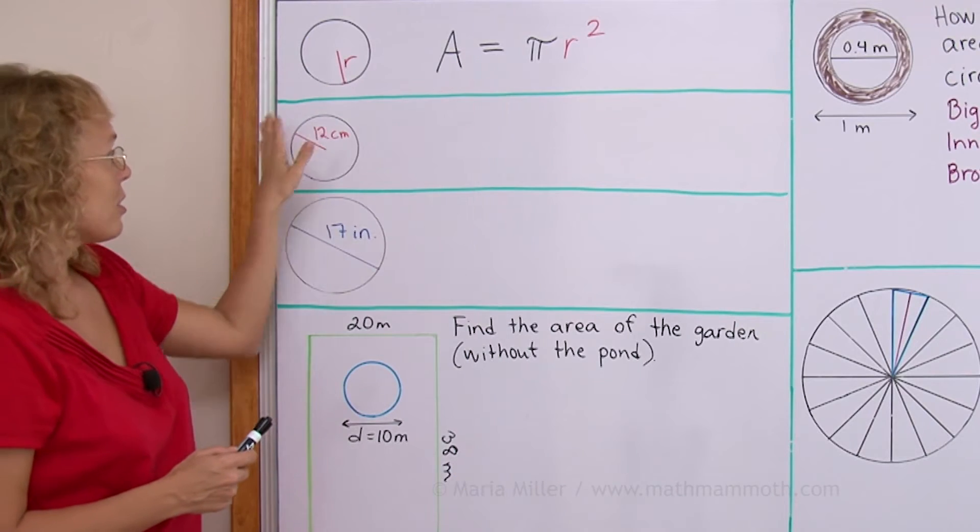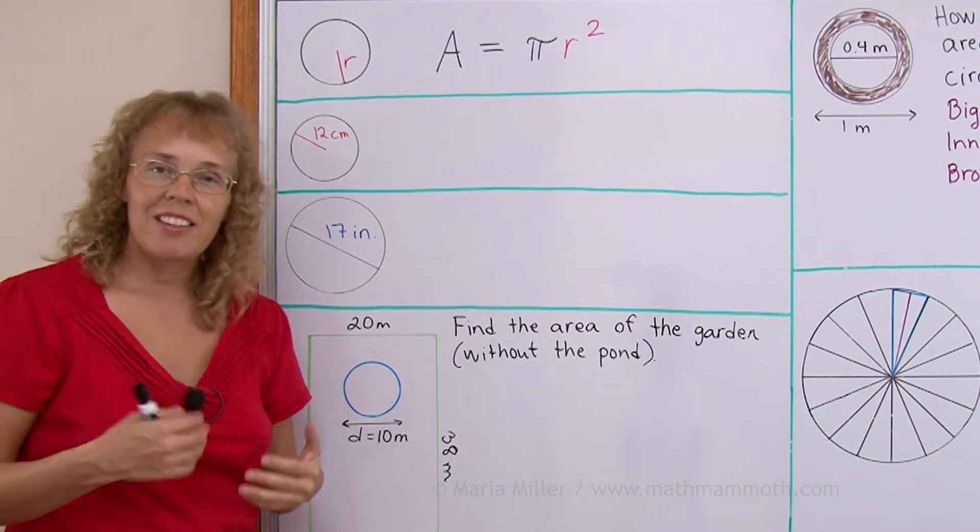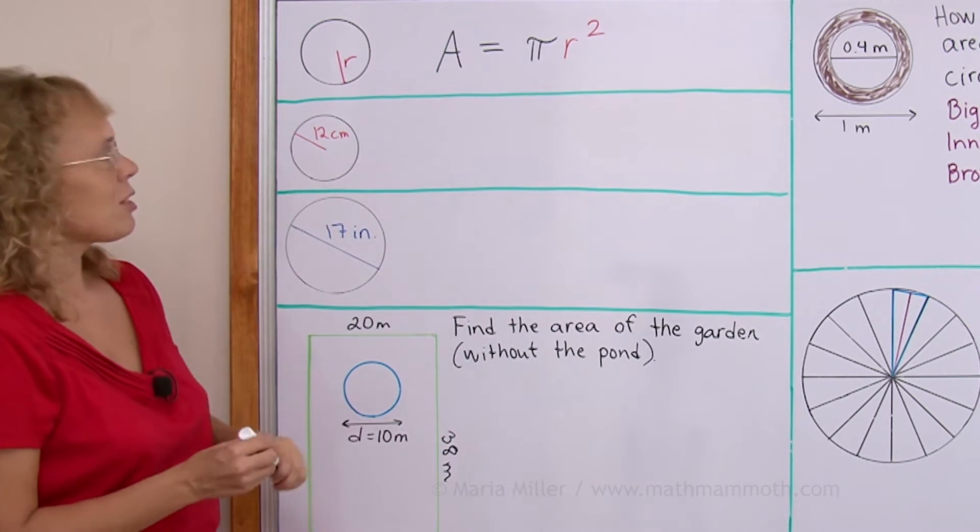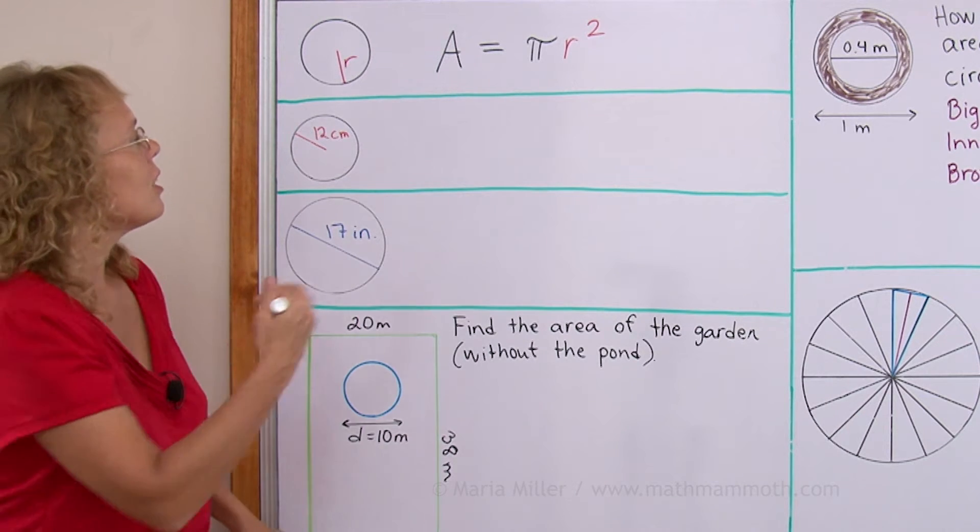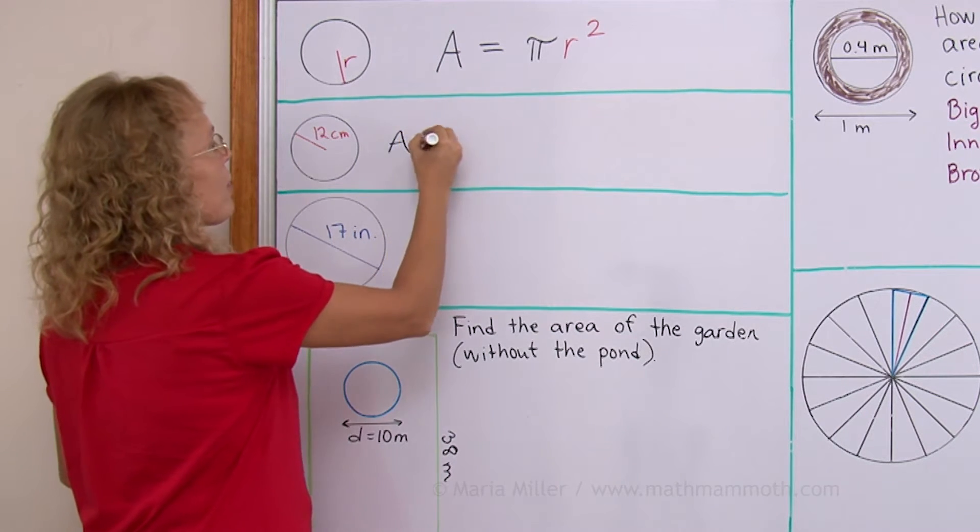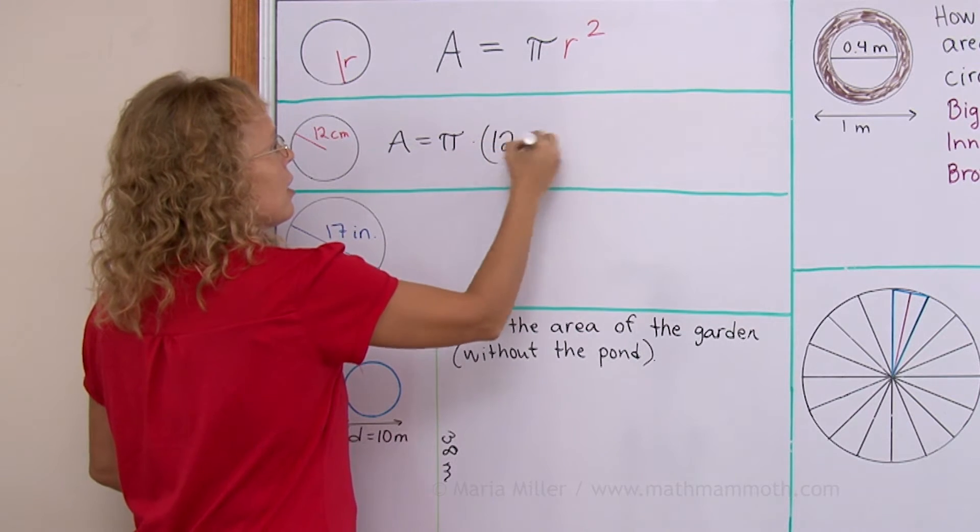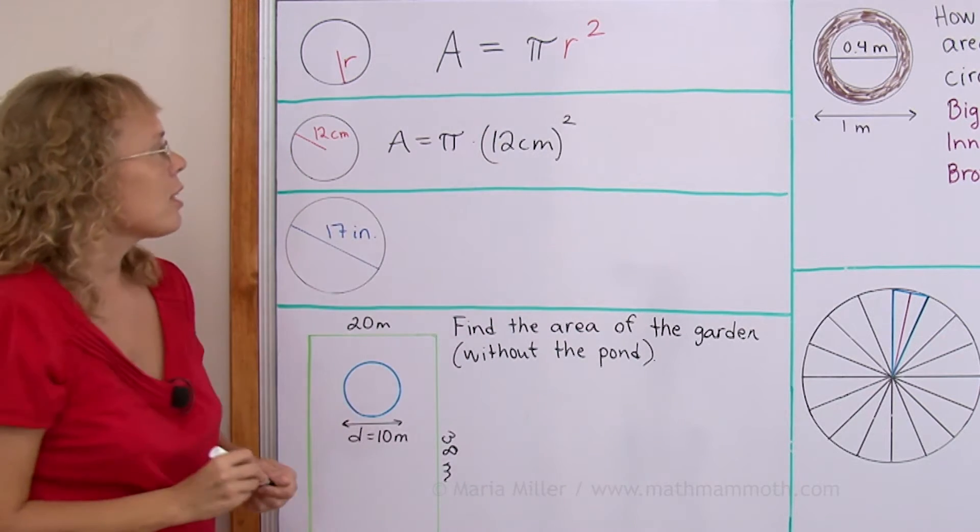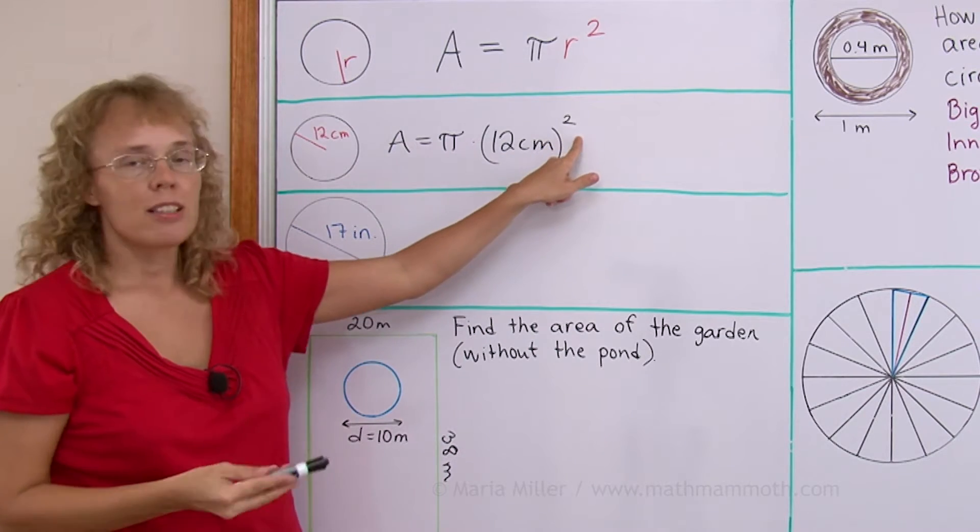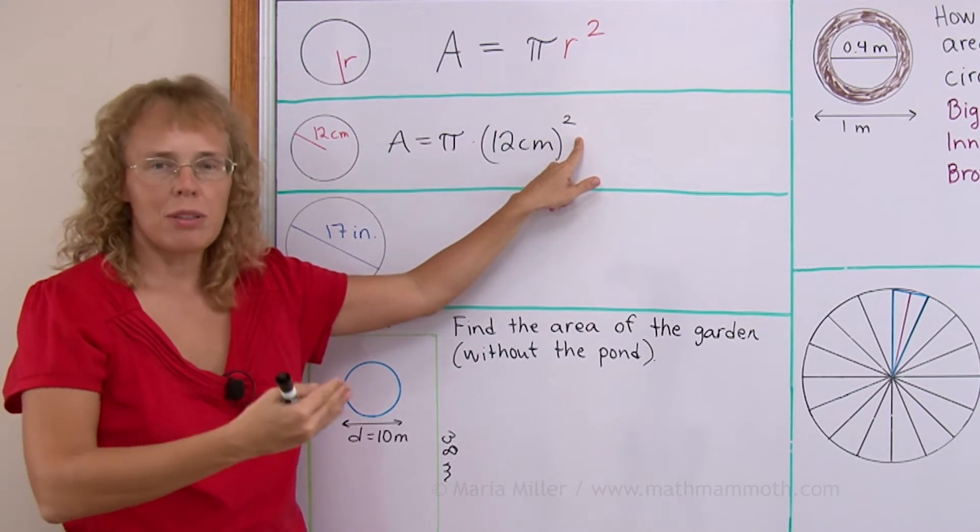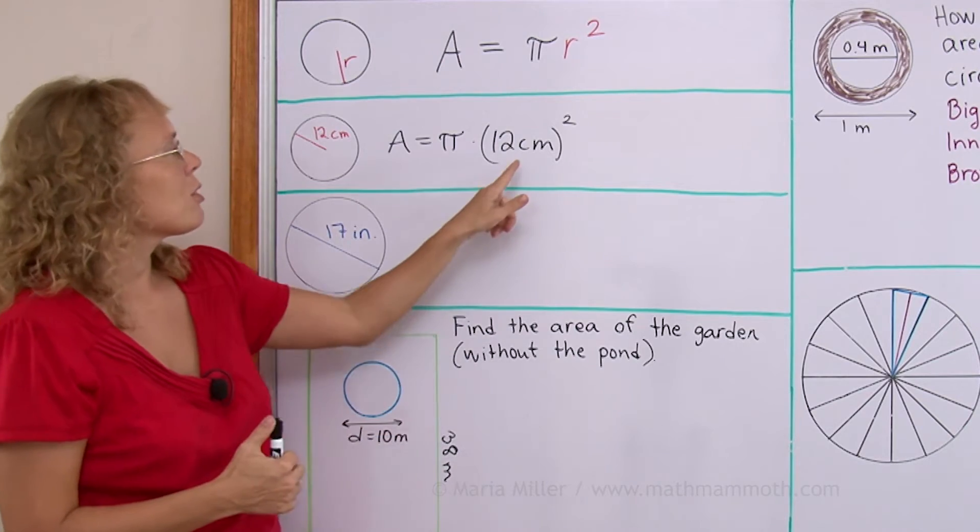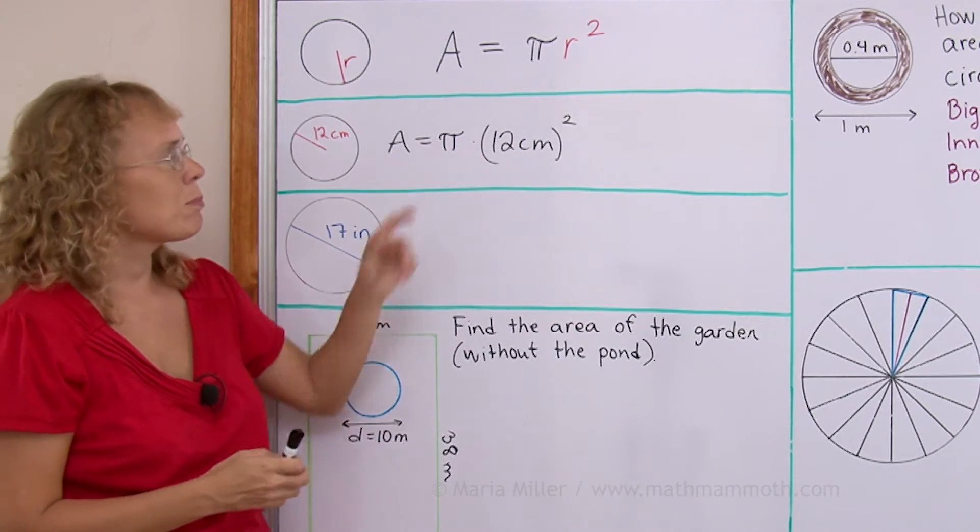Here I have a circle and I need to find its area. I know the radius. The radius is 12 centimeters. So the area is simply pi times radius squared or 12 centimeters squared. And now you take your calculator. 12 squared of course will be 12 times 12. 144.